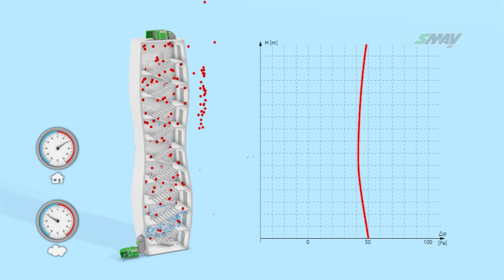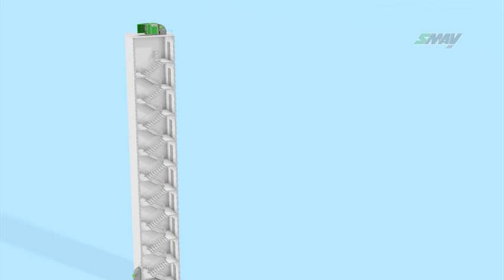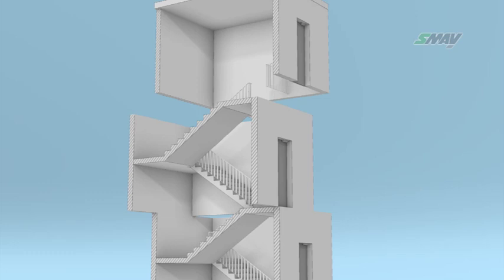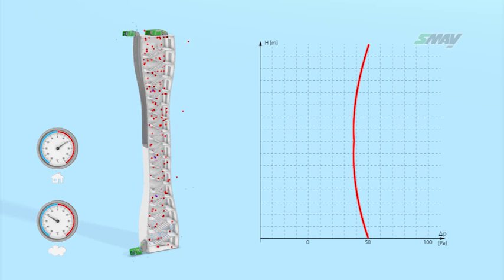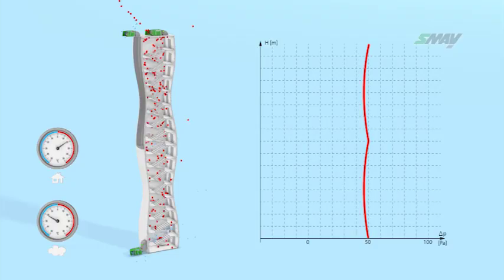For stairwells in buildings which are more than 35 meters tall, an additional air supply point is required every 10 floors. The air supply to the stairwell is activated automatically once pressure drops below a pre-set value, which may be caused by leaks and opened emergency exits.